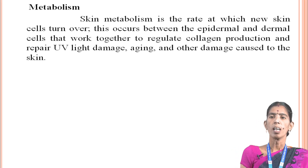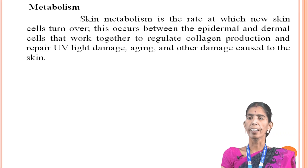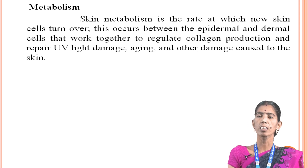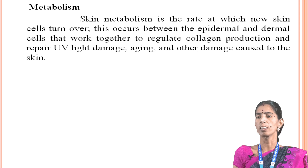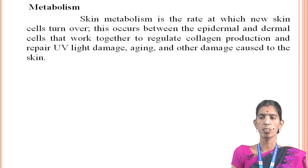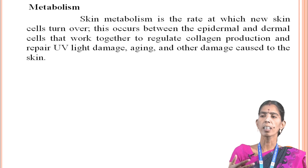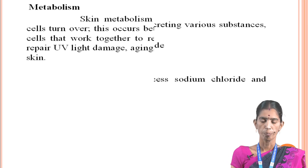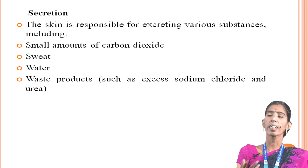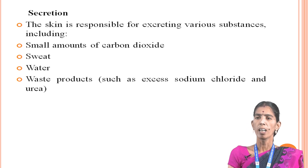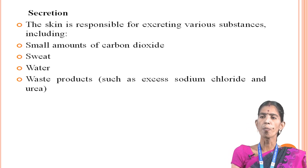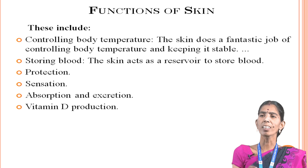Then metabolism. Skin metabolism is the rate at which new skin cells turn over. This occurs between the epidermal and dermal cells that work together to regulate collagen production and repair UV light damage, aging and other damage caused to the skin. Then secretion: the skin is responsible for excreting various substances, including small amounts of carbon dioxide, water and waste products.